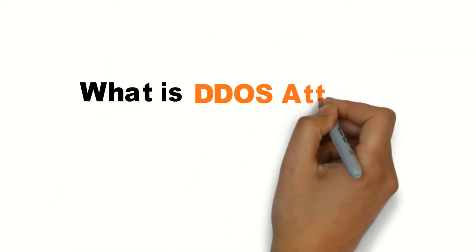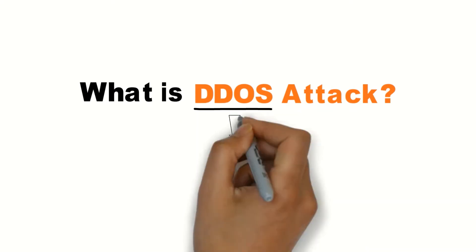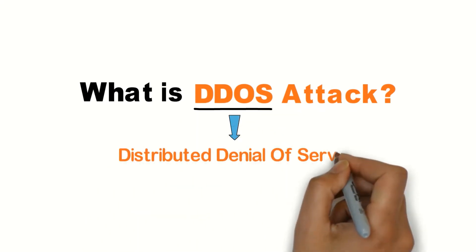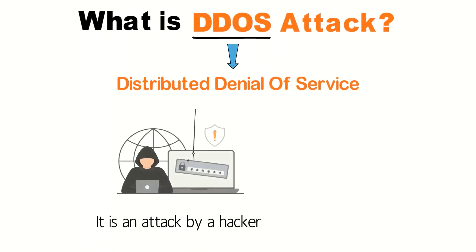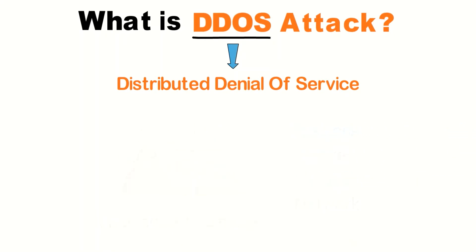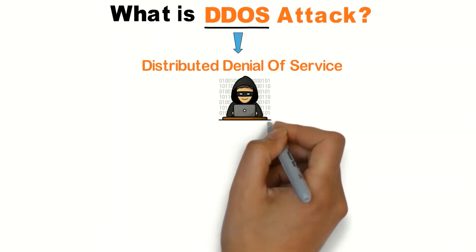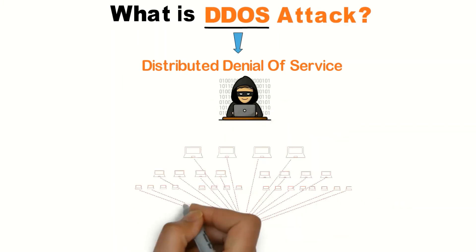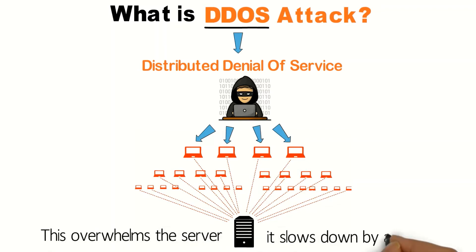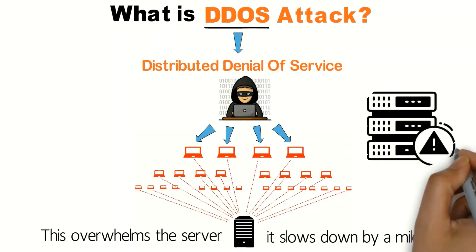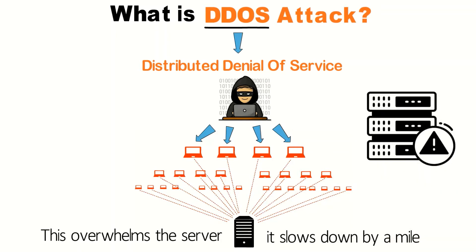What is a DDoS attack? DDoS stands for Distributed Denial of Service. It's an attack by a hacker on any business, server, service, or network. A hacker does it to crash the server by providing an excessive amount of traffic. This overwhelms the server, and at last, it slows down by a mile and leads the server to shut down or break down.